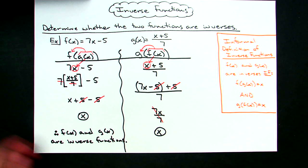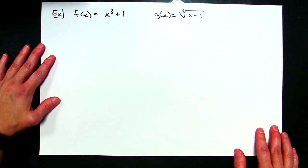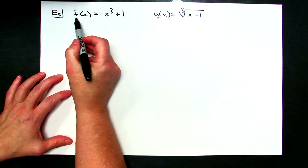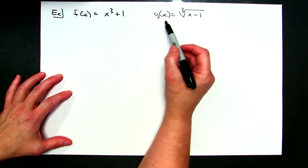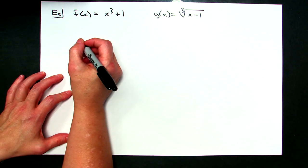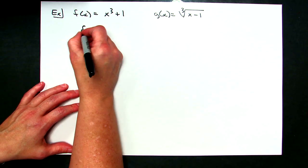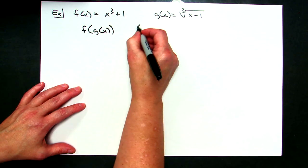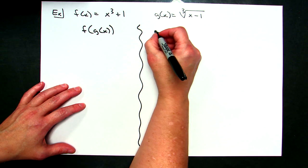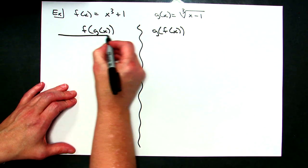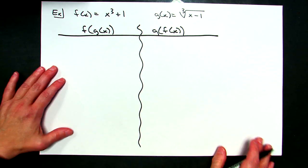Now let's look at another example, one that's a little more challenging because of what the original functions are. Our first function is f(x) equals x to the third plus one, and our g function is g(x) equal to the cube root of x minus one. Again, I'm going to set it up with two columns and work out f of g of x first, then g of f of x, seeing if I can get both equaling x.